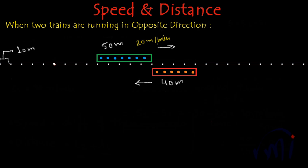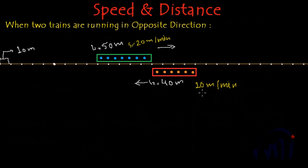I know it is very slow but we are assuming the speed in meters per minute. The speed of the red train is 10 meters per minute. So these are the assumptions: the length L1 is equal to 50 meters, the length L2 is equal to 40 meters, the speed S1 is 20 meters per minute, and the speed S2 is 10 meters per minute. Now let's see what happens when they try to cross each other completely.